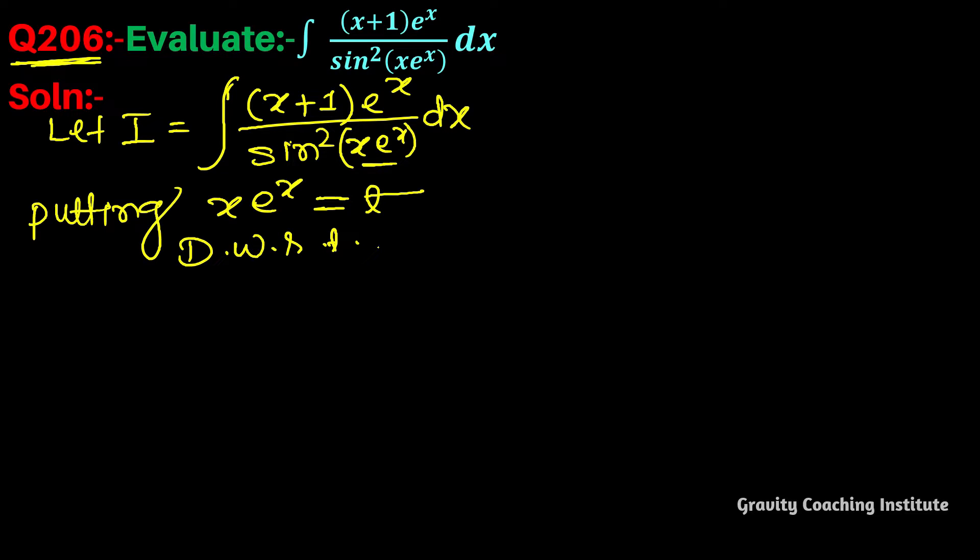So x·e^x into differentiation of e^x, plus e^x into differentiation of x. This will give 1, and dt will be 1 dt, and this common term is e^x. So e^x(x+1)dx = dt.